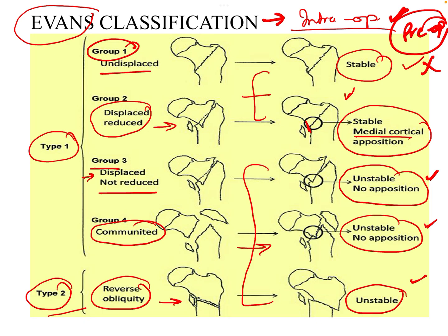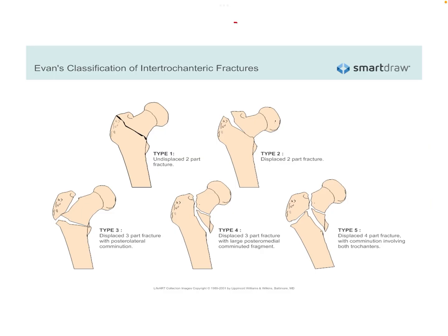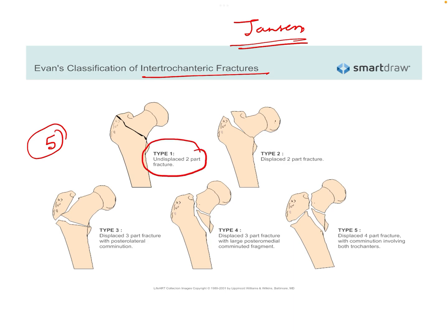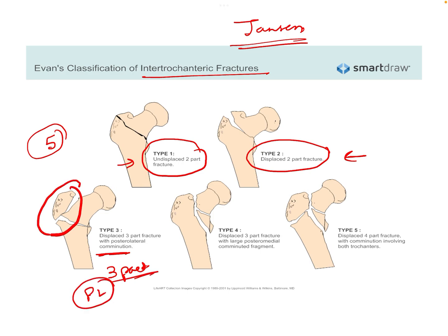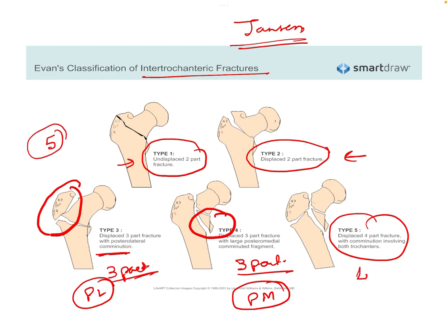One modification of the Evans classification is the Jensen modification, which gives five types of intertrochanteric fractures. Type 1 is undisplaced and two-part. Type 2 is displaced and two-part. Type 3 is a three-part fracture with a posterolateral combination — the greater trochanter is fractured. Type 4 is also three-part with a posterior-medial combination — the lesser trochanter is fractured. Type 5 is a displaced four-part fracture.